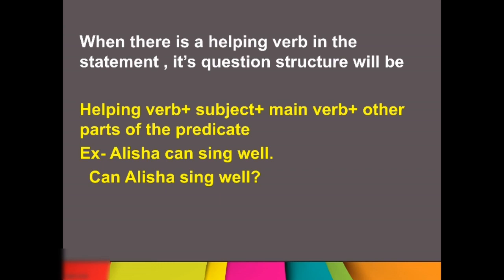Listen carefully. When there is a helping verb in the statement — agar aapko ek statement diya gaya hai aur us mein helping verb hai — so its question structure: first of all you will put helping verb, then subject, then main verb, and then other parts of the predicate — that means rest of the sentence. Just take this example: Alisha can sing well. Here Alisha is the subject. Can is helping verb. Sing is the main verb. And well is rest of the part of the sentence.